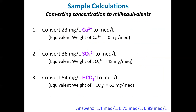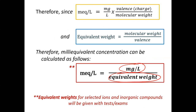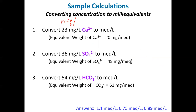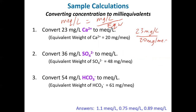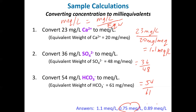Here are the examples using that formula: milliequivalents per liter equals milligrams per liter divided by equivalent weight. So 23 mg/L divided by 20 mg/meq equals 1.1 meq/L. Then 36 divided by 48, and 54 divided by 61. Punch those into your calculator and you should get the answers shown at the bottom.